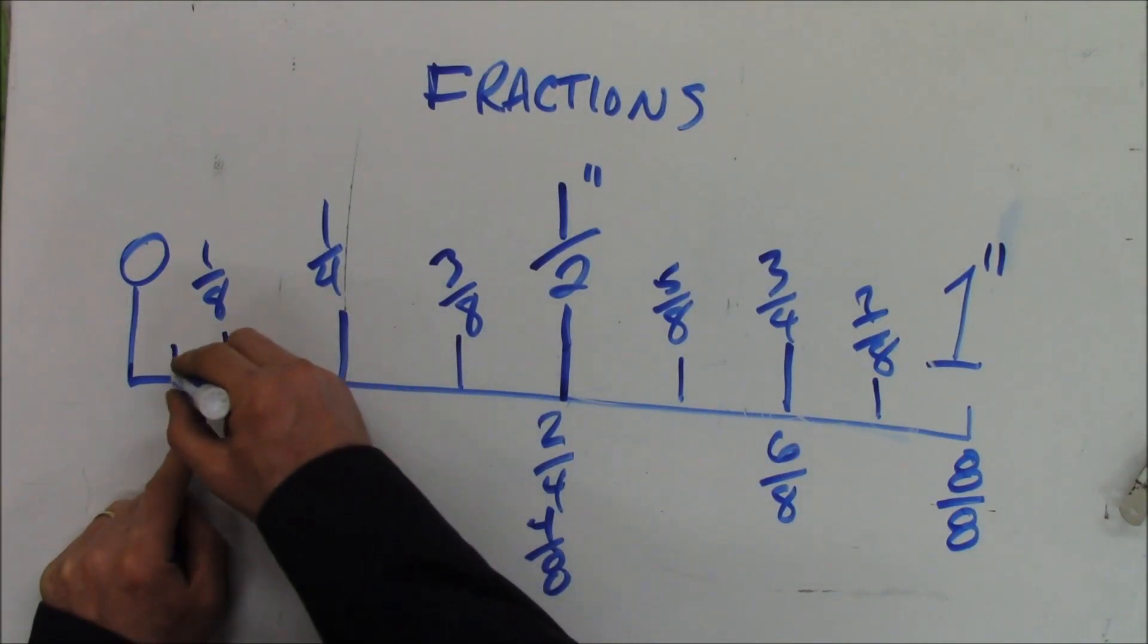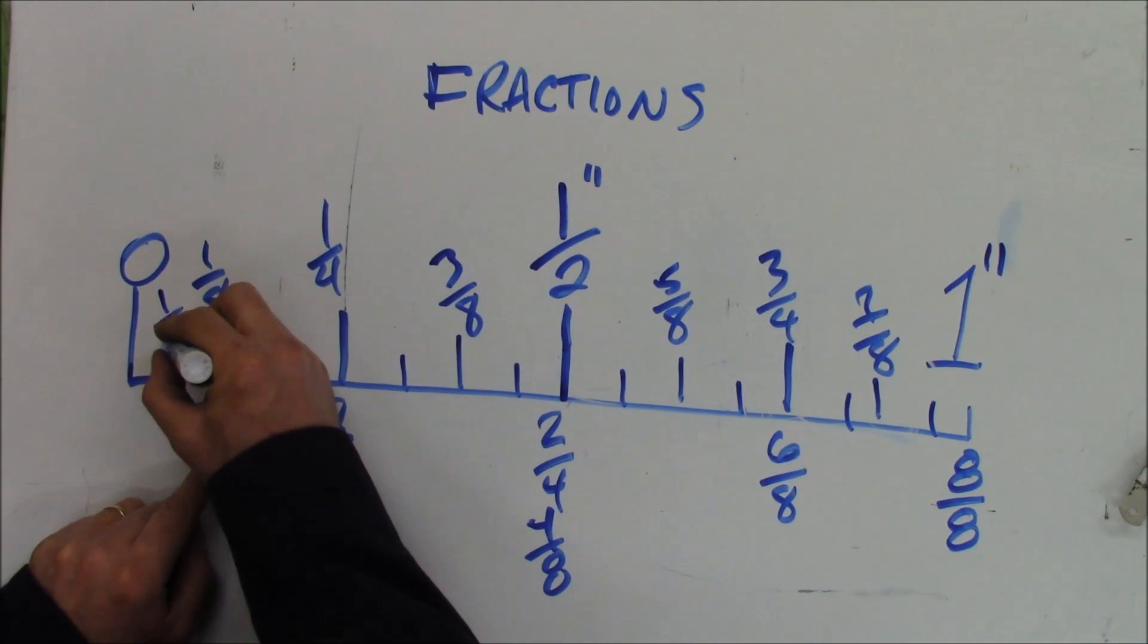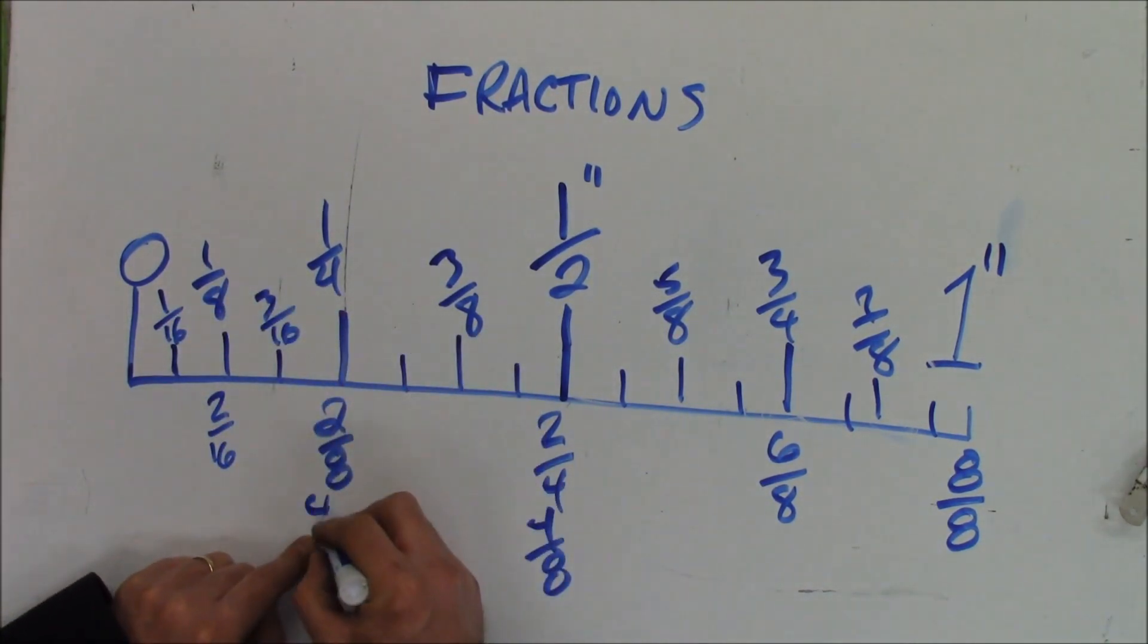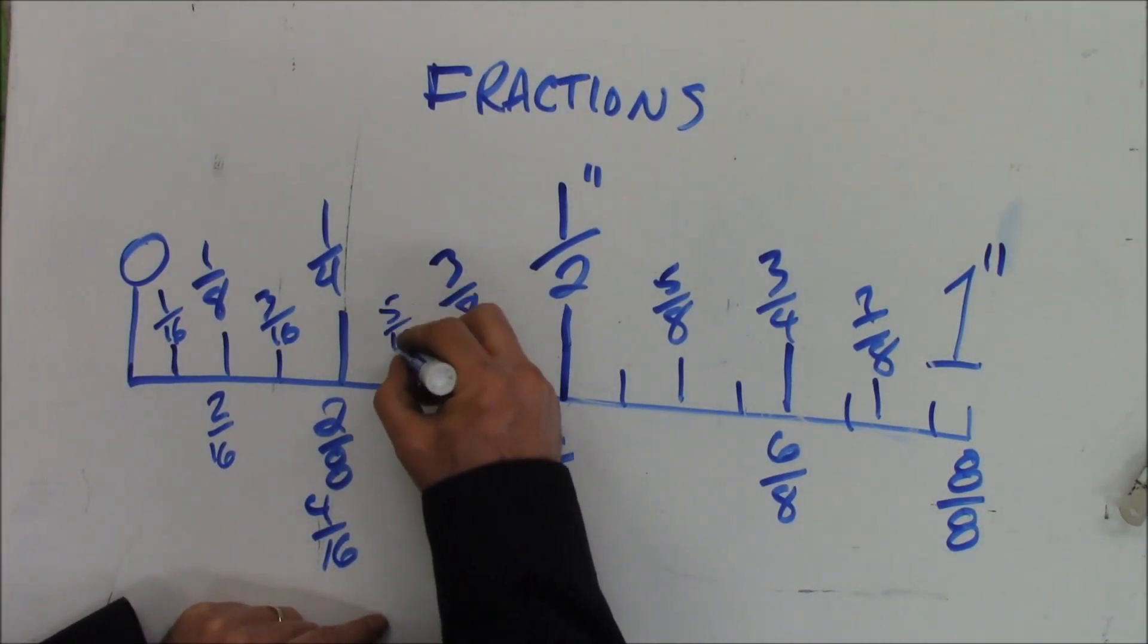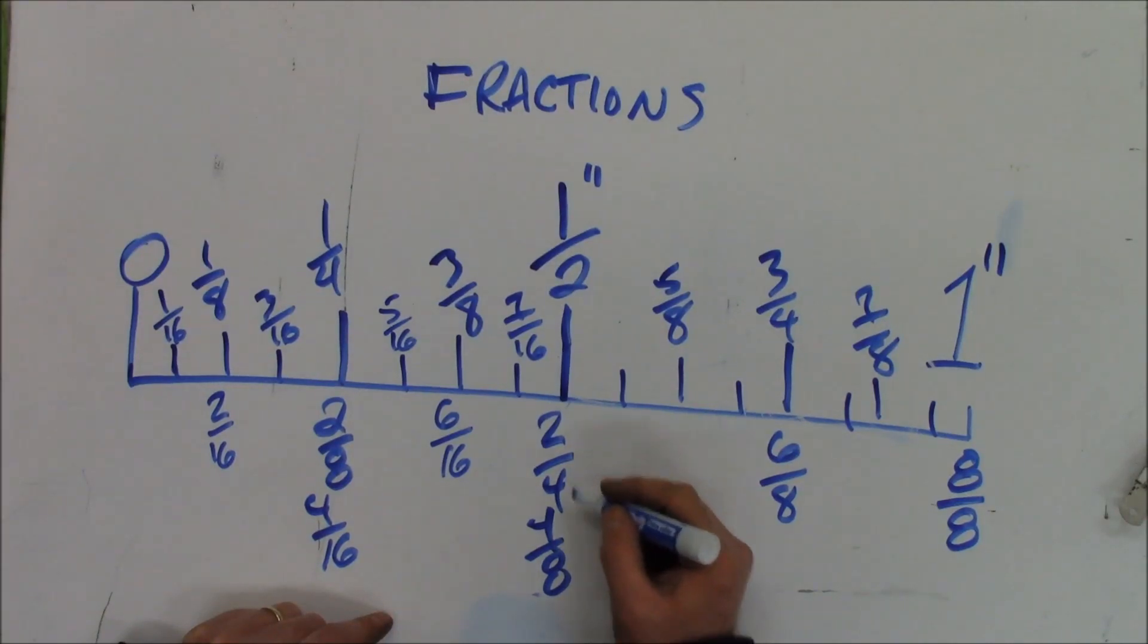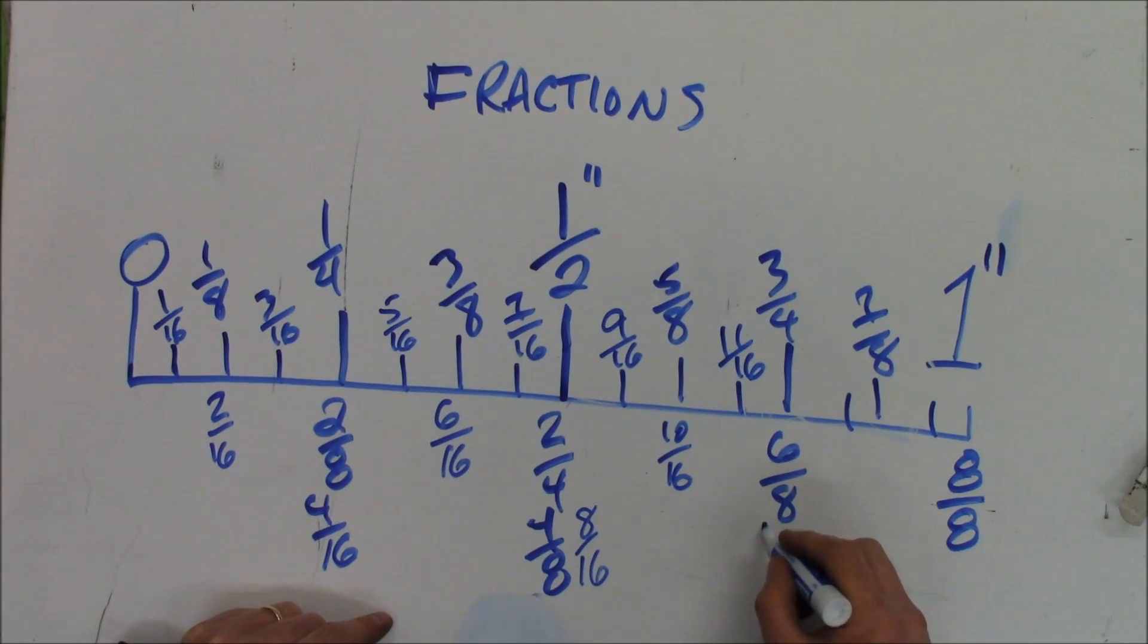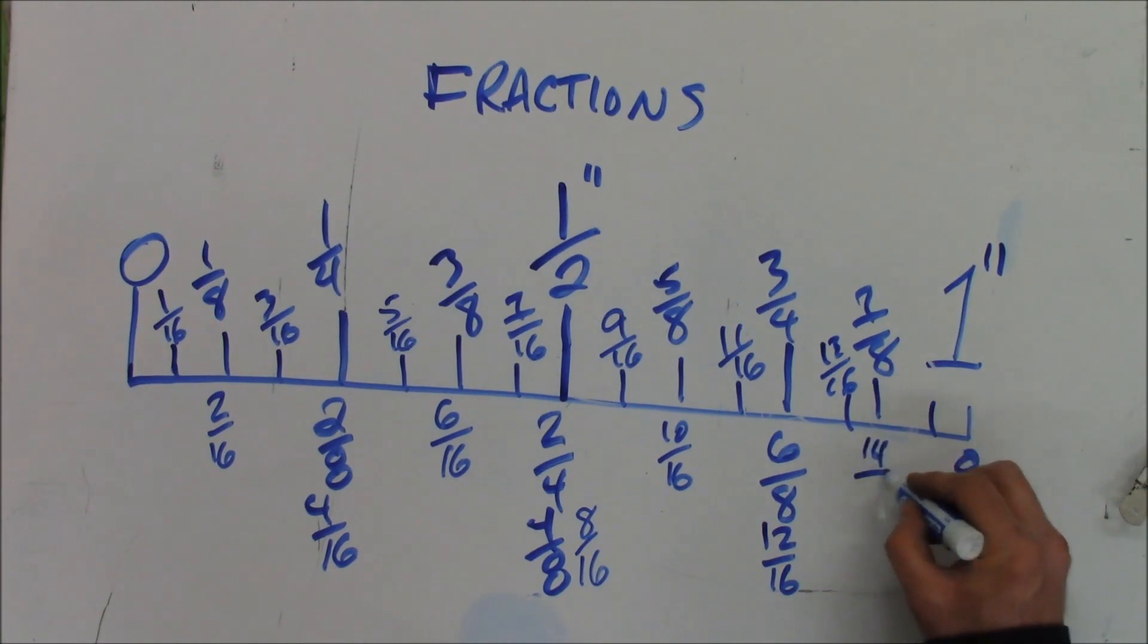I can go smaller. I can go down this way and split it into 16 pieces. So this would be one sixteenth, two sixteenths, but you can reduce it. Three sixteenths, four sixteenths, which is still the same fraction. Five sixteenths, six sixteenths, seven sixteenths, eight sixteenths, which is still a half. This would be nine sixteenths, ten sixteenths, eleven sixteenths, twelve sixteenths. One of my mechanic buddies is like, can I borrow your three quarter inch wrench? I said, I don't have a three quarter inch, but I got a six eighths wrench. Thirteen sixteenths, fourteen sixteenths, fifteen sixteenths. And then sixteen sixteenths.